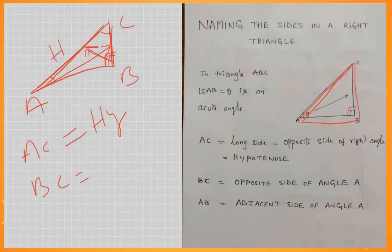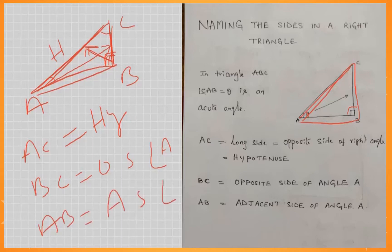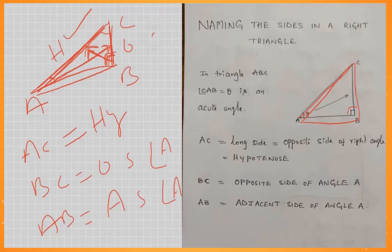We will see the opposite side, the remaining side, and the adjacent side. If we see the right angle, we will see the opposite side. We will see the opposite side of the right angle.